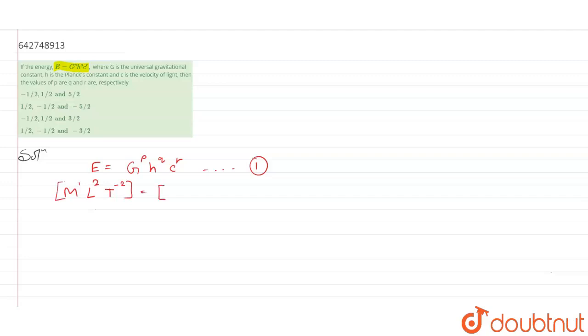m power minus 1, l power 3 and t power minus 2 whole power p. Next, m power nothing, that is 1, l power 2 and t power minus 1 whole power q followed by l t power minus 1 whole power r.